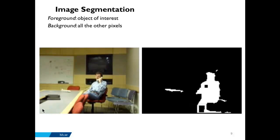In other cases, we may not be interested in all regions of the image — maybe only one region. For instance, we might be interested in knowing where a person is. In this case, the person is the object of interest, also called the foreground. The rest of the image, marked in black, is the background, meaning it is the region we are not interested in and will not apply further processing to.